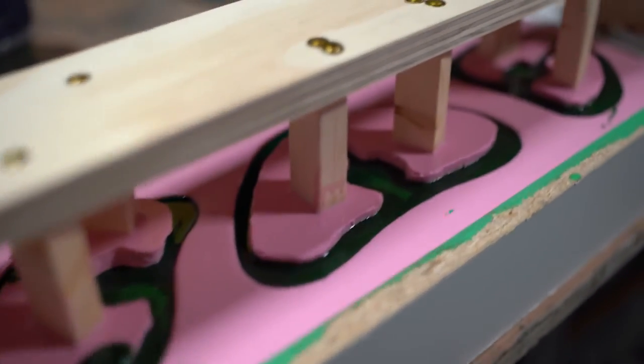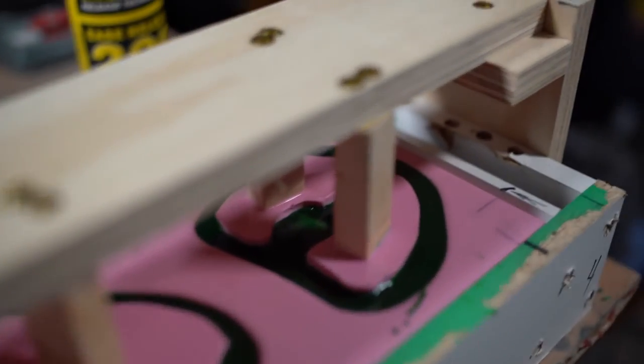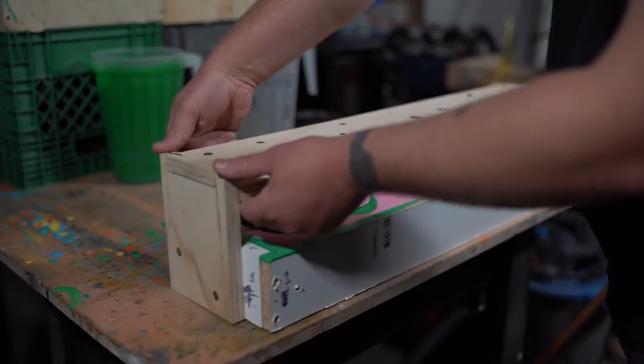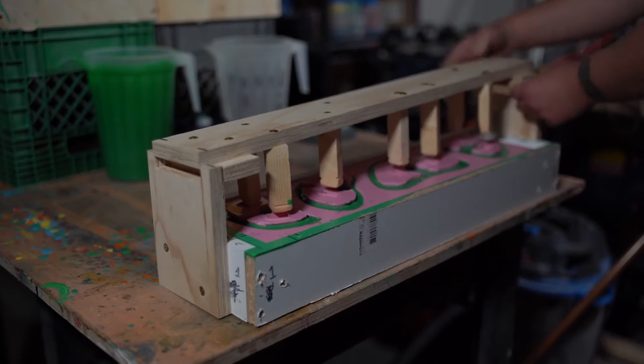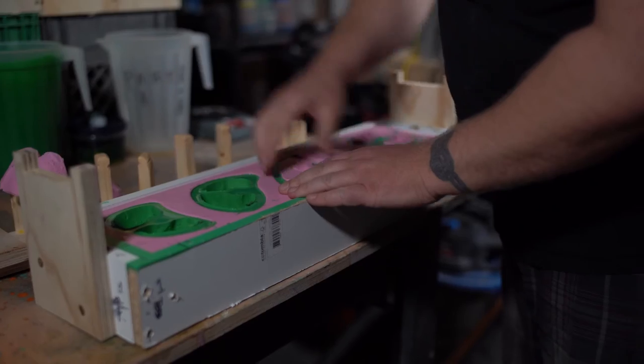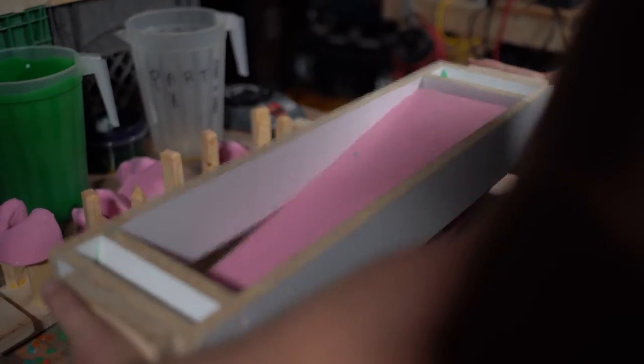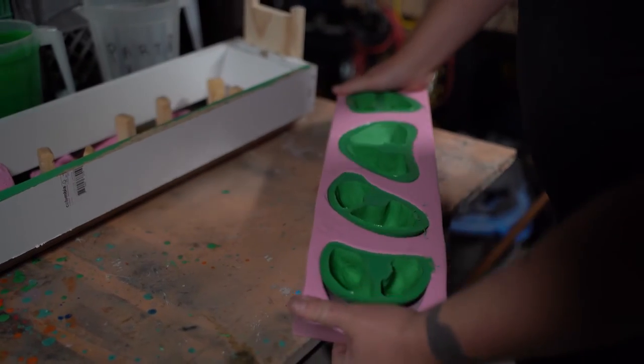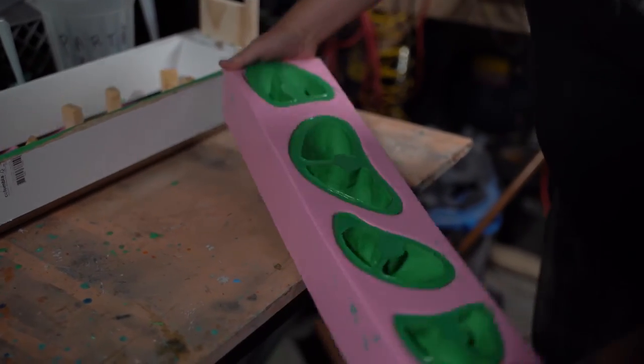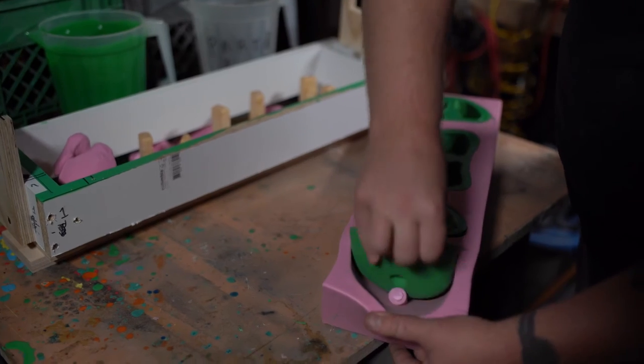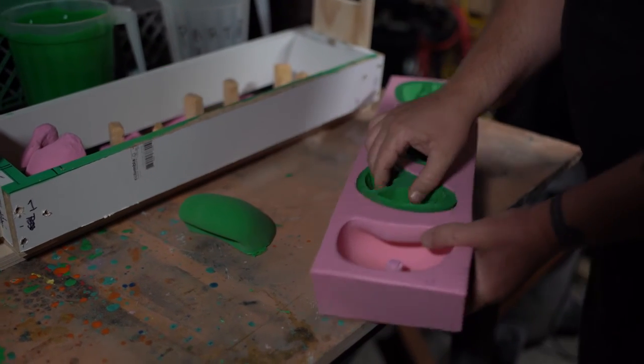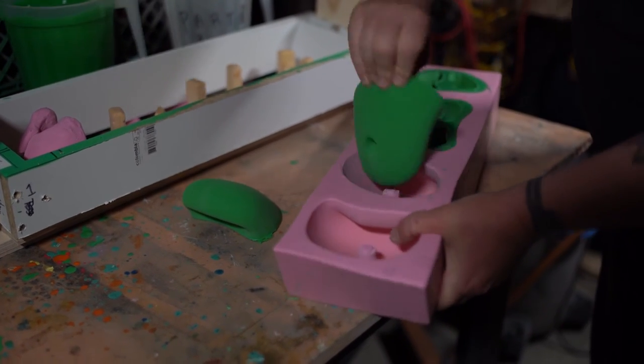For the majority of the time, the route setters are the ones that get the glory for their creativity and ability to put together combinations of holds in such a way to challenge us and keep us coming back. The fact of the matter is that the hold shaper is an integral part of that process. The shape of the hold can help unleash a setter's creativity and their drive for competition.